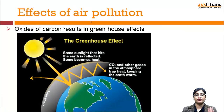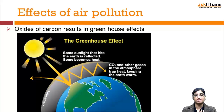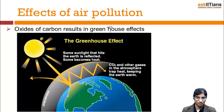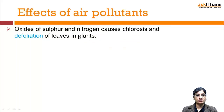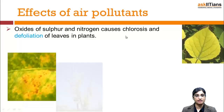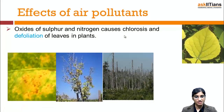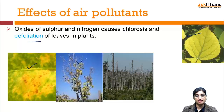Now I am going to tell you about the effects of air pollution. Carbon results in the greenhouse effect, which is a kind of global warming where the temperature of the earth increases due to carbon sources — from old automobiles and vehicles. The effect of sulfur and nitrogen causes chlorosis and defoliation of leaves. Chlorosis is the yellowing of leaves, and defoliation means the falling of leaves out of season.